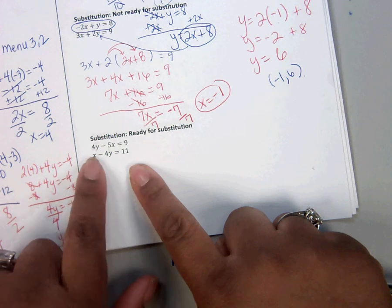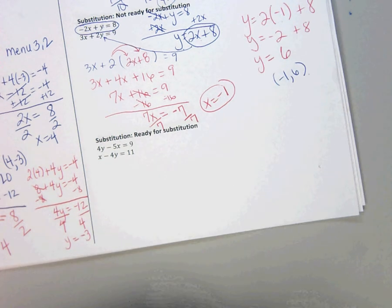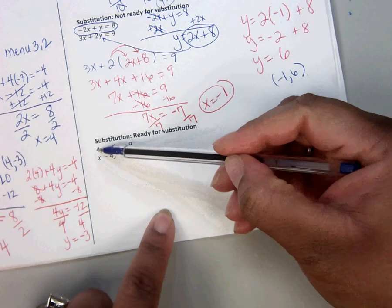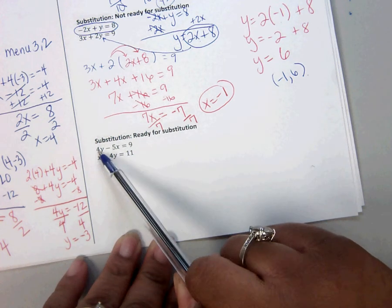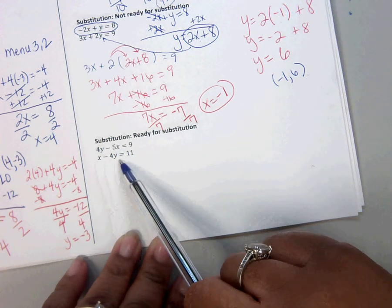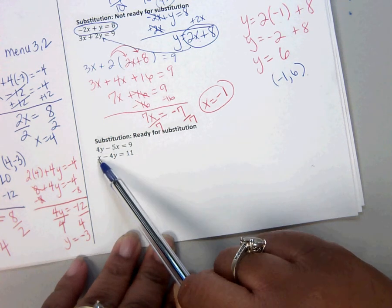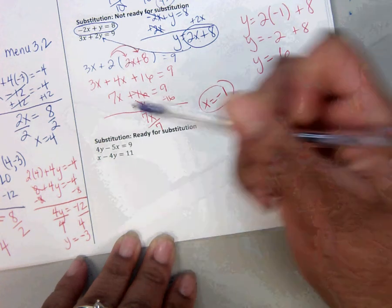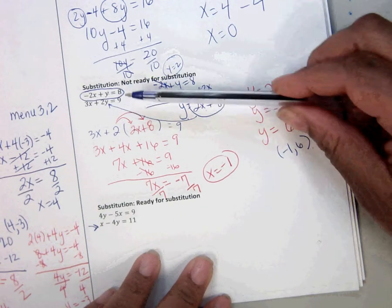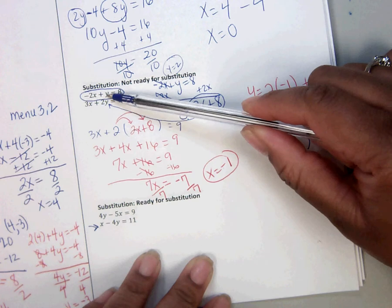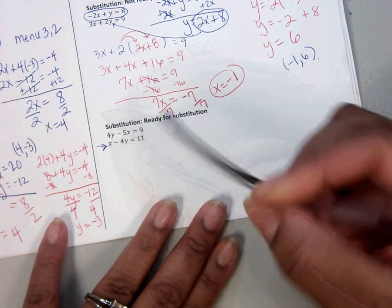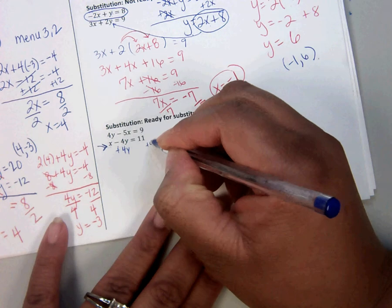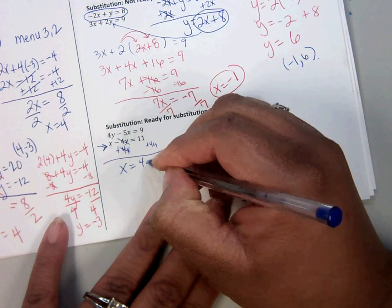Now, which equation should we pick to solve for a letter? Don't pick the first one because it has a letter here and here. You're going to pick the equation that doesn't have a number. I said letter. I meant number. It has a number here and it has a number here. But in the second equation, the x does not have a number. So pick him. Think about it. That's what we did over here. The y didn't have a number. That's how I knew to pick this one and solve for that letter. So he doesn't have a number. So pick him and solve for that letter. That means move 4y to the other side. And x equals 4y plus 11.